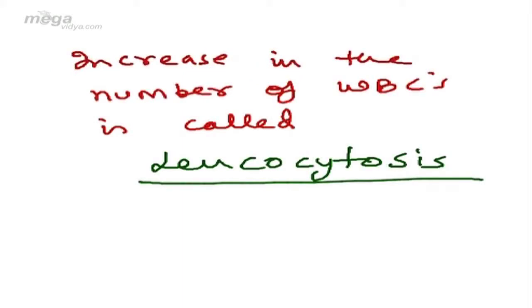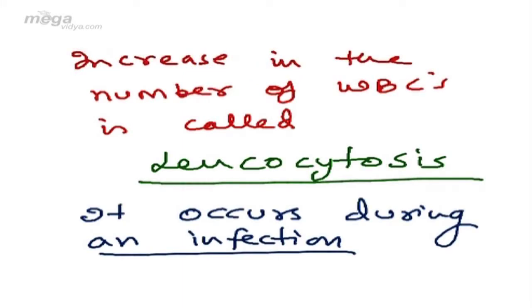Increase in number of WBCs is called leukocytosis. Increase in WBCs occurs during an infection in which these increased WBCs help the immune system to fight against the diseases.